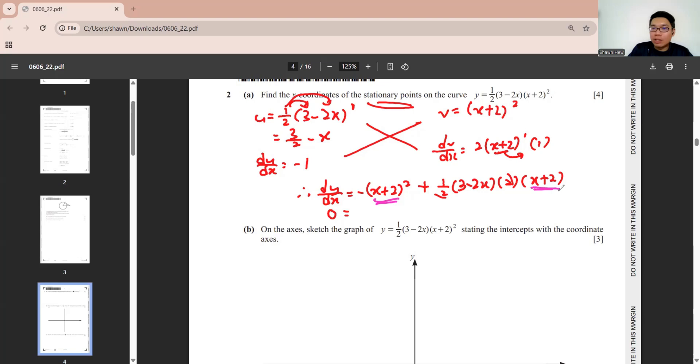x plus 2 is the common thing, so we can extract it out. Then this part minus x minus 2. Then this part we left 3 minus 2x. x equals to minus 2 or x equals to 1/3. They only request for x coordinate, so gain all 4 marks.